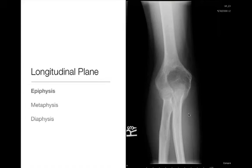So we talked about where lesions occur in the transverse plane — whether they're centrally located, eccentrically located, cortically based, or juxtacortical. Next we'll talk about lesions located in the longitudinal plane, which really just means whether the lesion is in the epiphysis, the metaphysis, or the diaphysis.